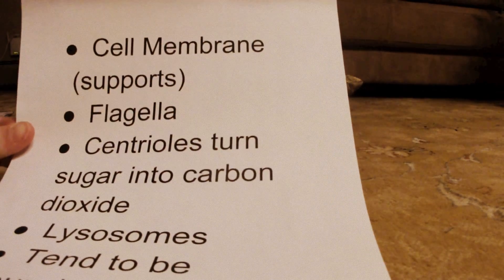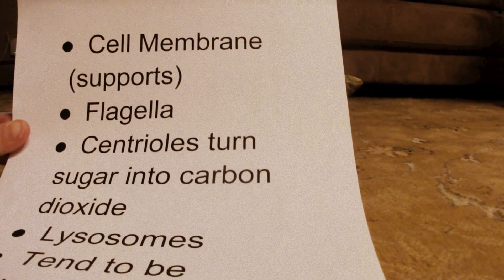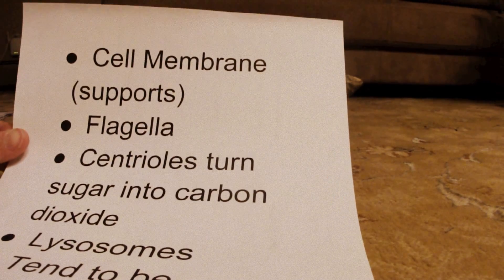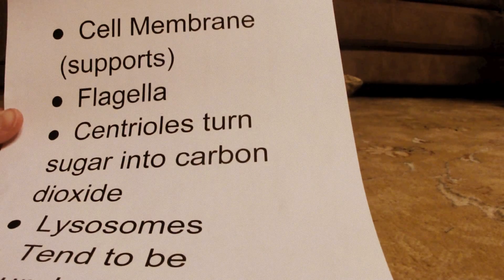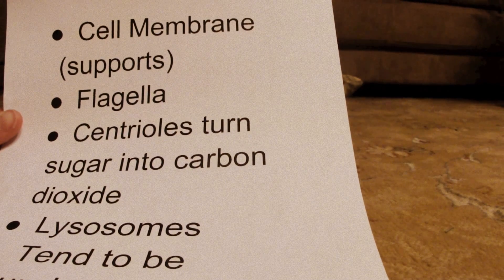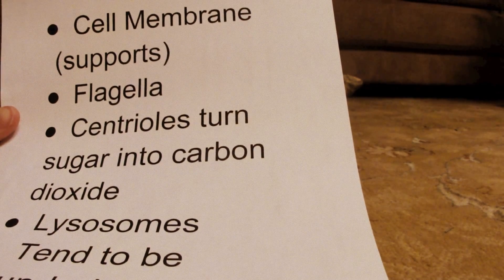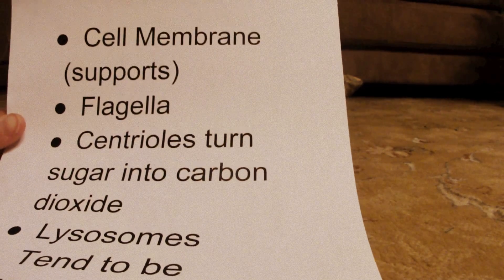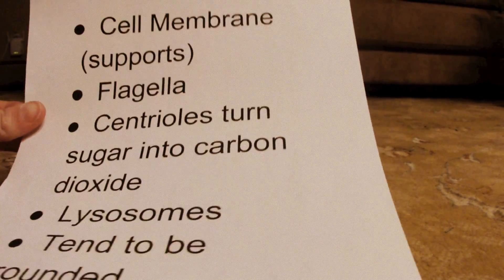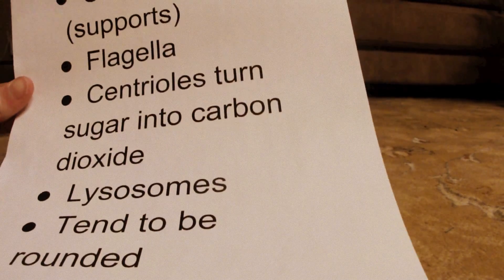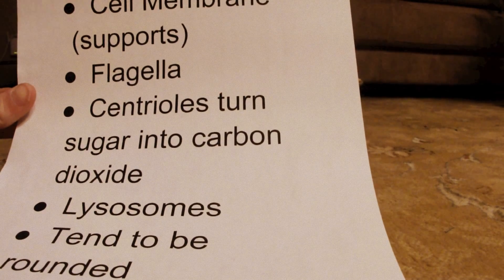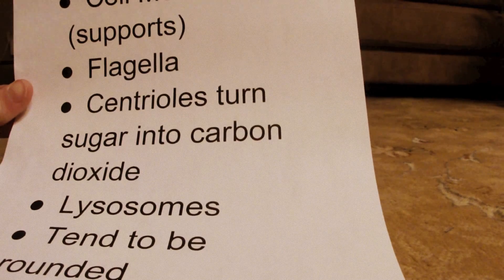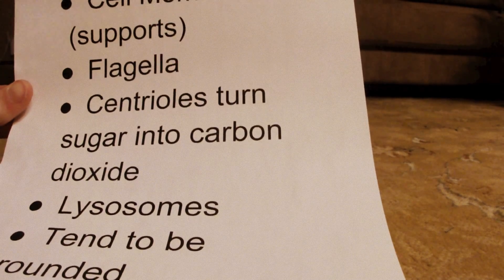Next we have flagella, which can help the cells travel. Next, centrioles turn sugar into carbon dioxide and are used during cell division. The lysosomes digest waste, and animal cells tend to be rounded.